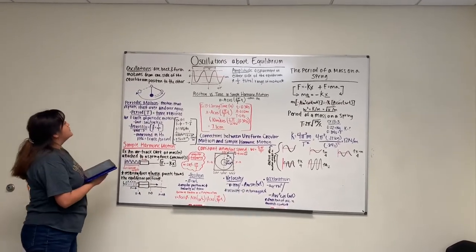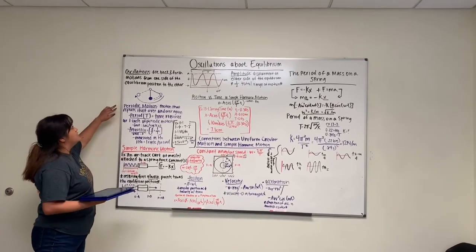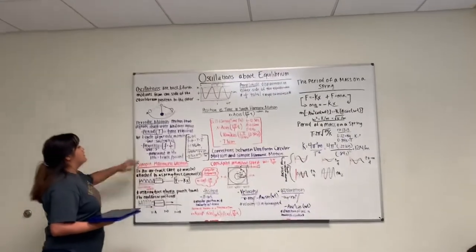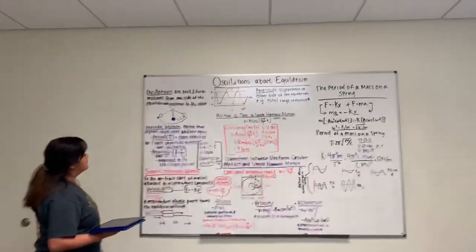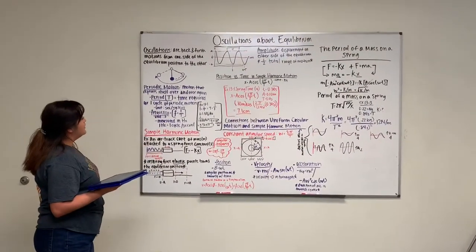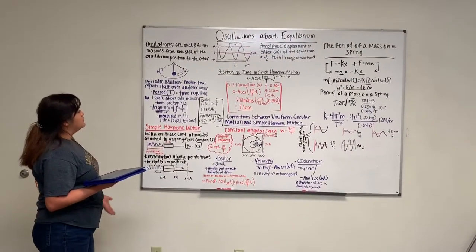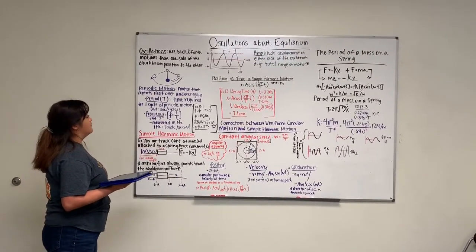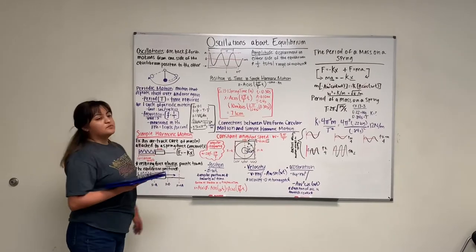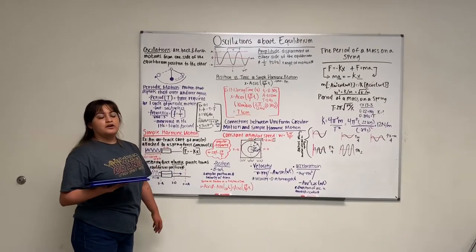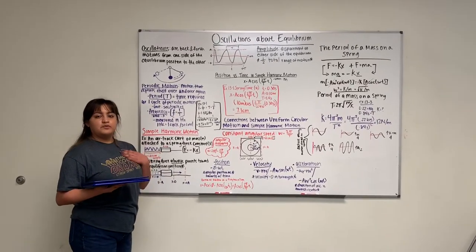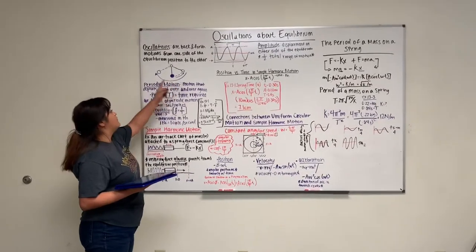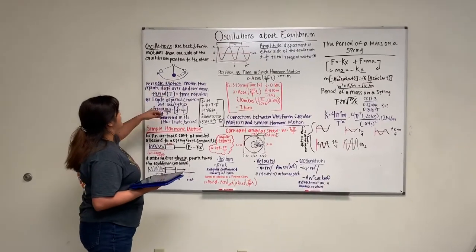Next, I'll go into a little bit more depth of the oscillations by the periodic motion. The periodic motion is a motion that repeats itself over and over again. So in this case, it could be like a heartbeat or a child on a swing, moving back and forth.